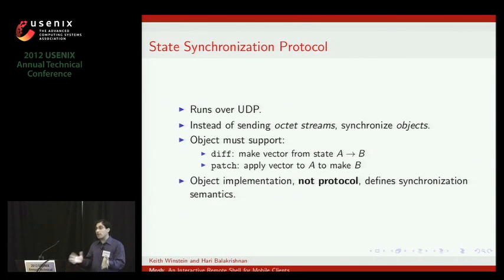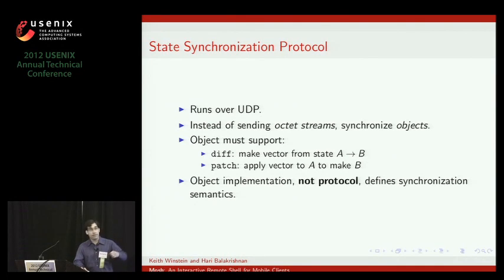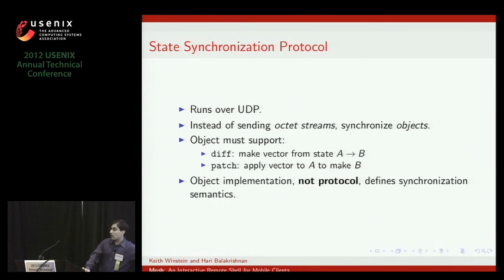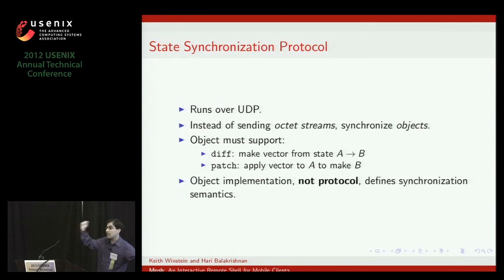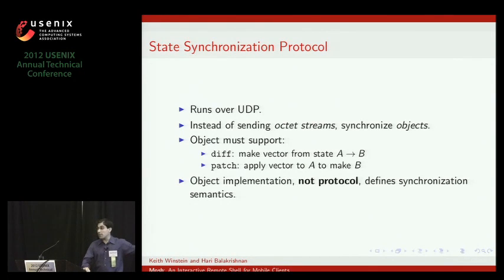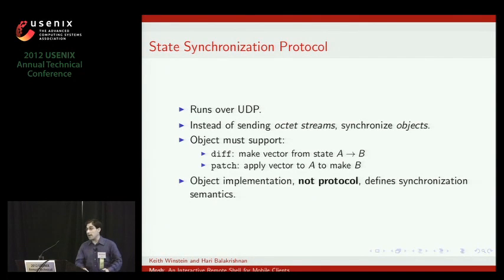So the protocol doesn't have to know the inner details of these objects, but the object has to support a simple interface. The SSP has to be able to inquire of the object: here's the state that I think the receiver has — state 3 — and I want to get them to state 9, so could you please give me a diff between state 3 and state 9? And that's just a string. That's what we convey over the network. And the object also has to support the inverse operation, patch — to say, okay, number 3, here's a patch, please mutate yourself to state number 9.